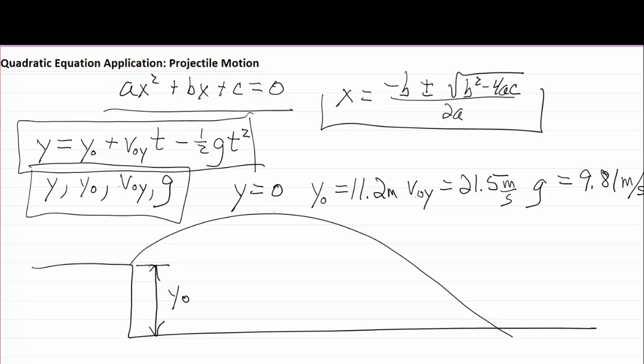Now I've got a y equals 0 here. We're going to be figuring out when does the thing drop down to the ground. So y equals 0 there.